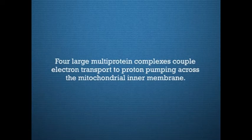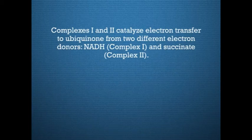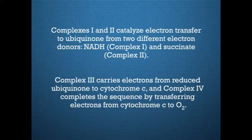Four large multiprotein complexes couple electron transport to proton pumping across the mitochondrial inner membrane. Complexes 1 and 2 catalyze electron transport to ubiquinone from two different electron donors: NADH in complex 1 and succinate in complex 2. Complex 3 carries electrons from reduced ubiquinone to cytochrome C, and complex 4 completes the sequence by transferring electrons from cytochrome C to molecular oxygen.